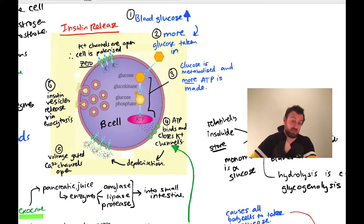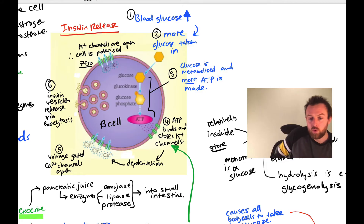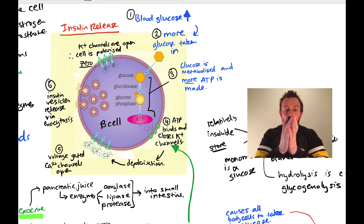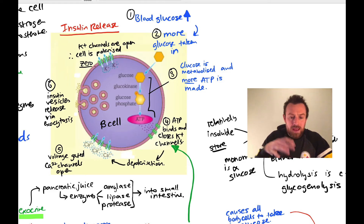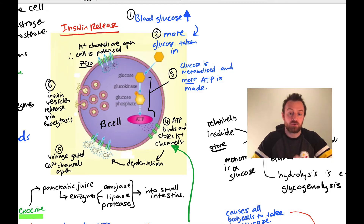There are a few differences between the beta cell and the synapse. The cargo in the vesicle differs: in a neuron it's acetylcholine, here it's insulin. Having insulin pre-packaged in vesicles allows the body to respond quickly to changes in blood glucose. If you had to make insulin via transcription and translation, it would take more time. Speed of response is why things are packaged in vesicles ready to go.